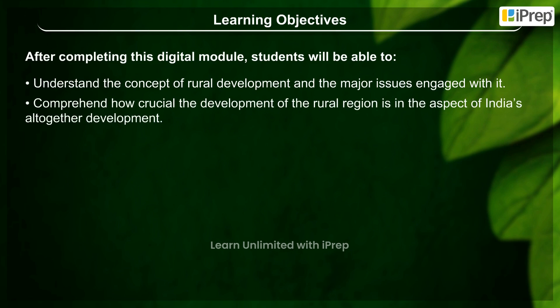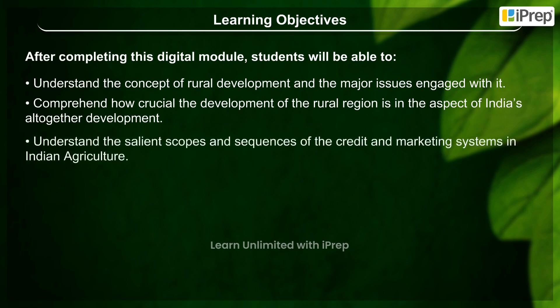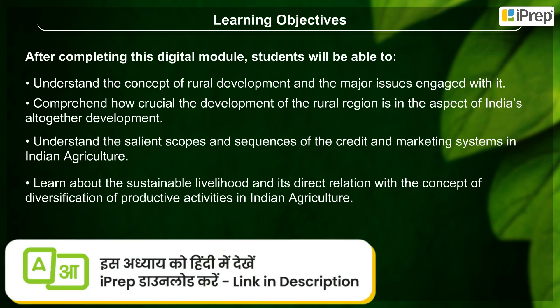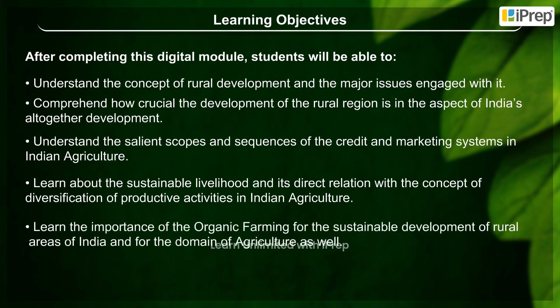Students will understand the salient scopes and sequences of the credit and marketing systems in Indian agriculture, learn about sustainable livelihood and its direct relation with the concept of diversification of productive activities in Indian agriculture, and learn the importance of organic farming for the sustainable development of rural areas of India and for the domain of agriculture as well.